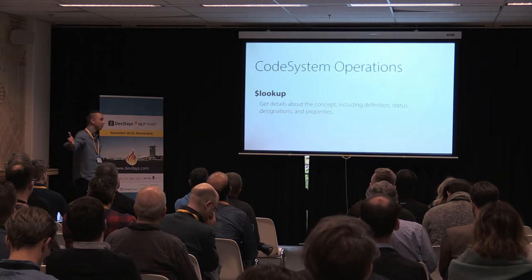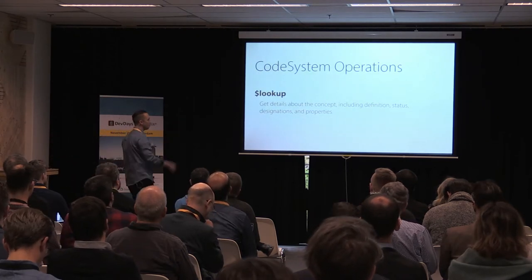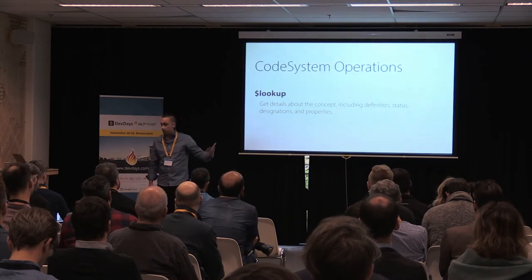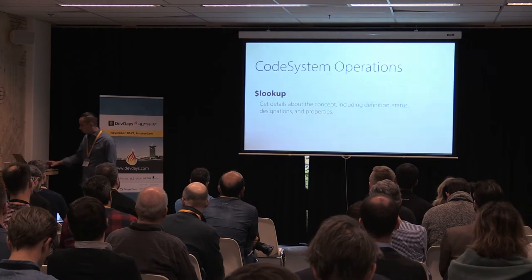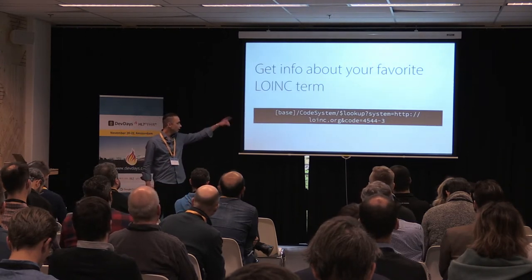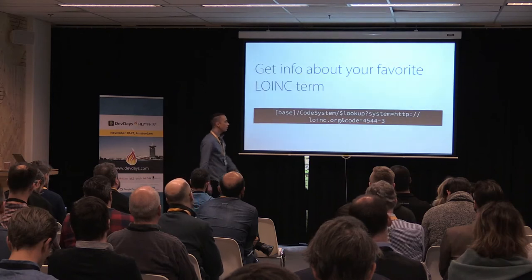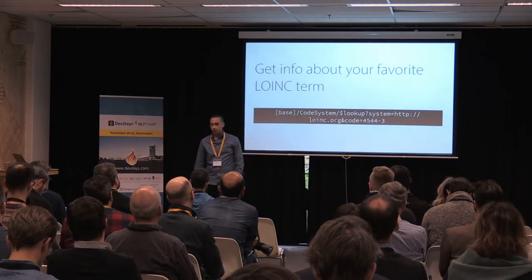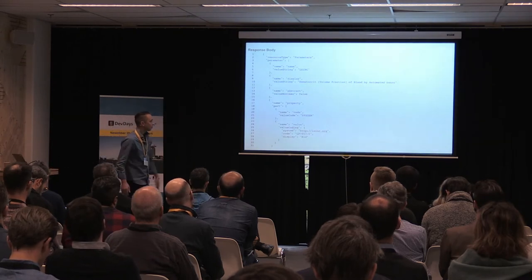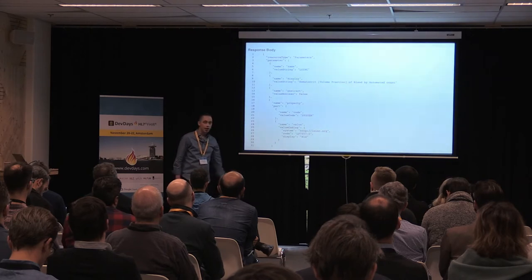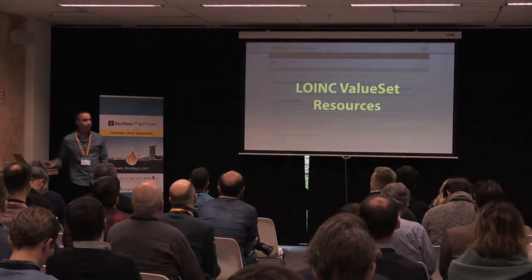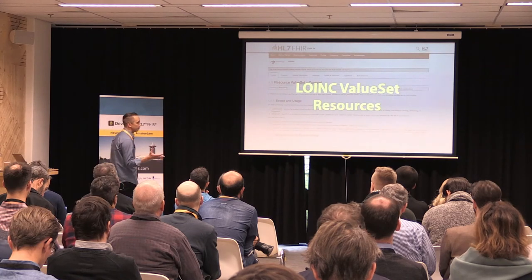The common code system operations you'll want to use include the lookup operation, where you pass a term and get back its details such as definition, status, descriptions, et cetera. If you want all the information about your favorite LOINC term, you pass your service URL lookup command, specifying the code system LOINC and the particular term. What you get back is the instance of that resource with the code, name, and all those specialized attributes. That's pretty basic — a lot of people use that to get LOINC details for any term they want.